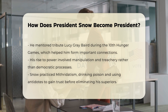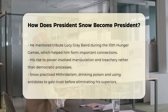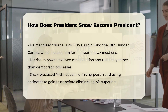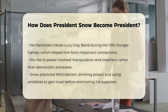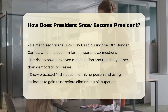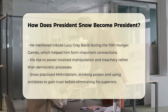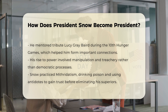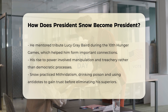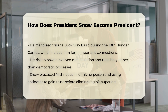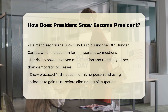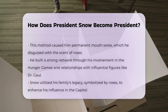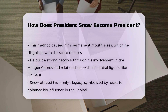Manipulation and treachery: Snow's ascent to power was not through democratic means, but rather through cunning, treachery, and the elimination of his enemies. He used a form of mithridatism, drinking poison and then taking an antidote to gain the trust of his superiors before poisoning them. This method, though effective, left him with permanent sores in his mouth, which he masked with the scent of roses.